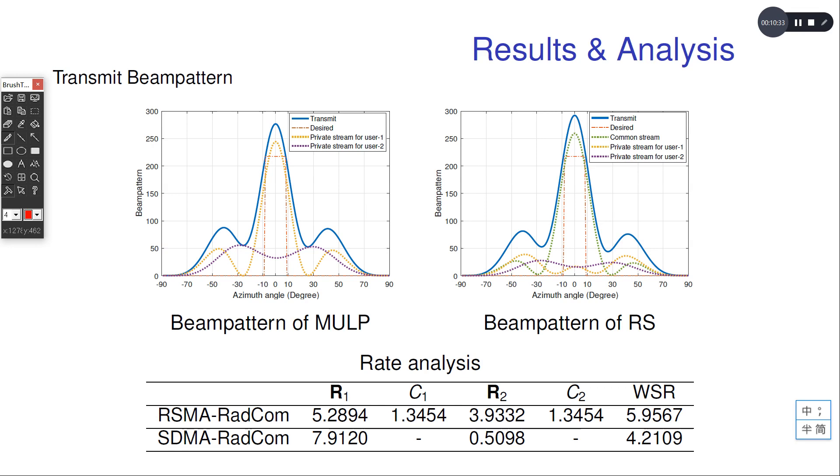In contrast, we can see in RSMA RadCom that the common stream take the major role at the zero degree. This is because the common stream can be decoded by both users instead of causing any interference to any user.